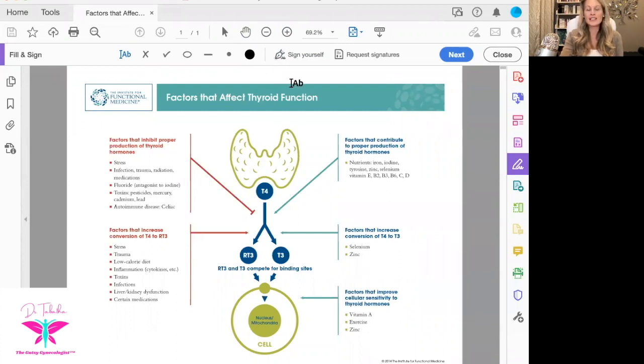The brain secretes TSH. That's the main blood draw that your doctor will check to tell you whether your thyroid is functioning. TSH is thyroid stimulating hormone. It's actually a brain hormone, not even a thyroid hormone. TSH comes down from the brain, tells the thyroid to make more or less T4.